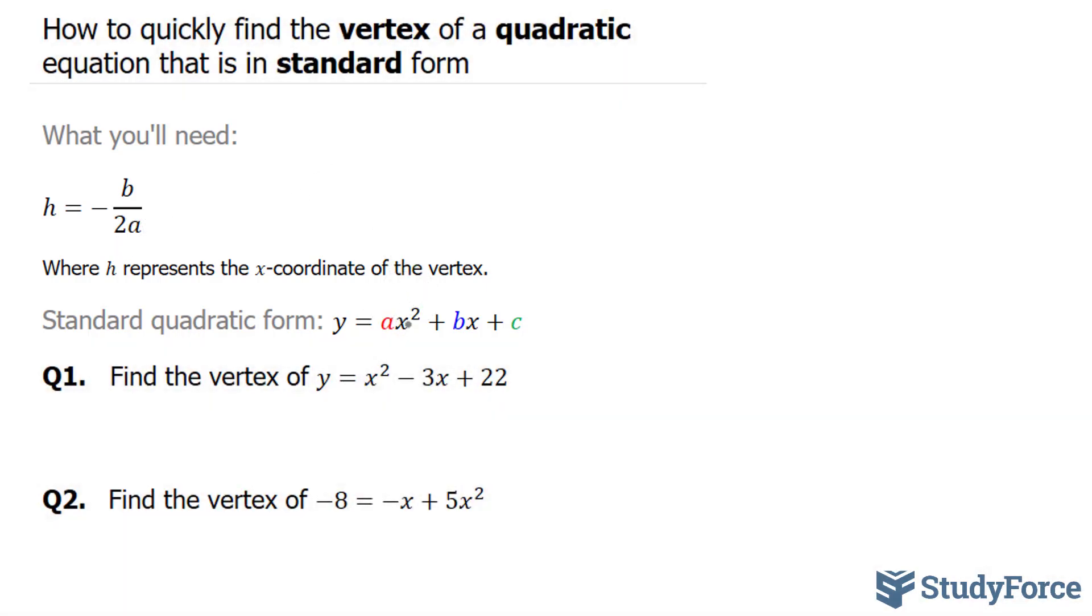So our first question reads, find the vertex of this equation. We have to identify our a and b term. Our a term here is equal to 1. It's this right here. Our b term here is equal to negative 3, and it's this coefficient right here.